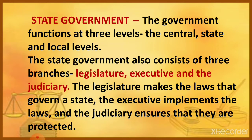The government functions at three levels: the central, state, and local levels. The state government also consists of three branches — legislature, executive, and the judiciary. The legislature makes the laws that govern a state, the executive implements the law, and the judiciary ensures that they are protected. Every government fulfills legislature, executive, and administrative functions.